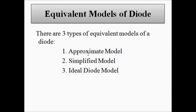The equivalent model means we are trying to draw an alternative circuit representation of that device. There are three types of equivalent models normally used for the analysis of a PN junction diode: the first is the approximate model, the second is the simplified model, and the third is the ideal diode model.